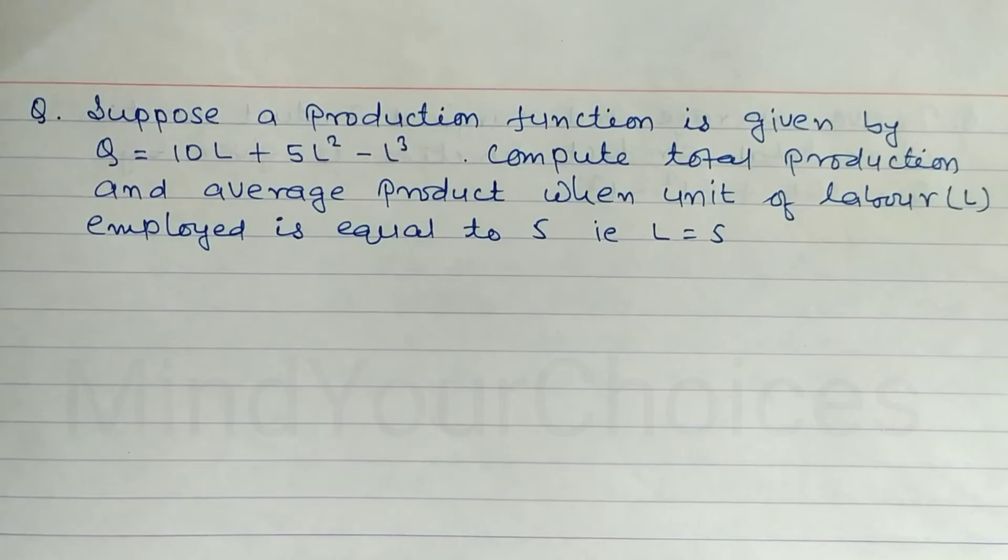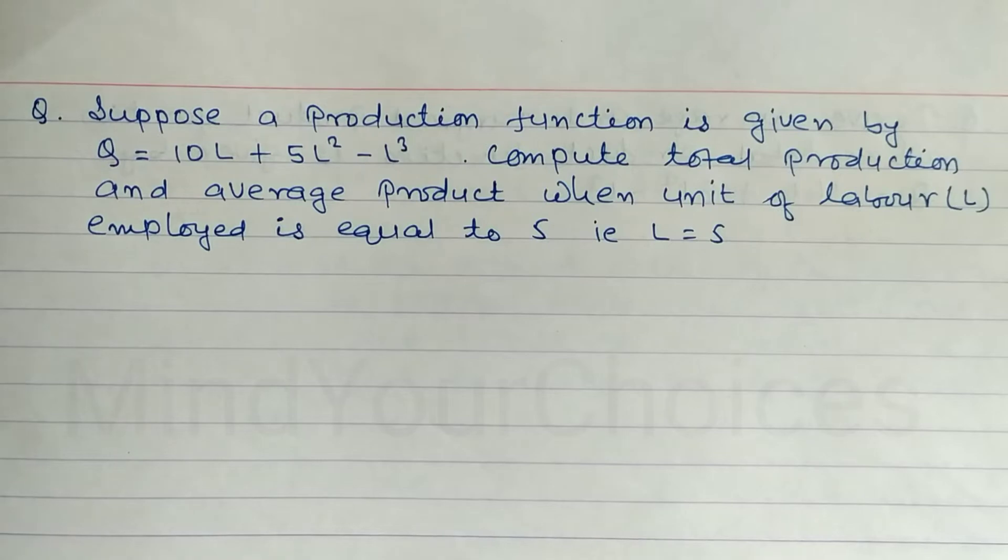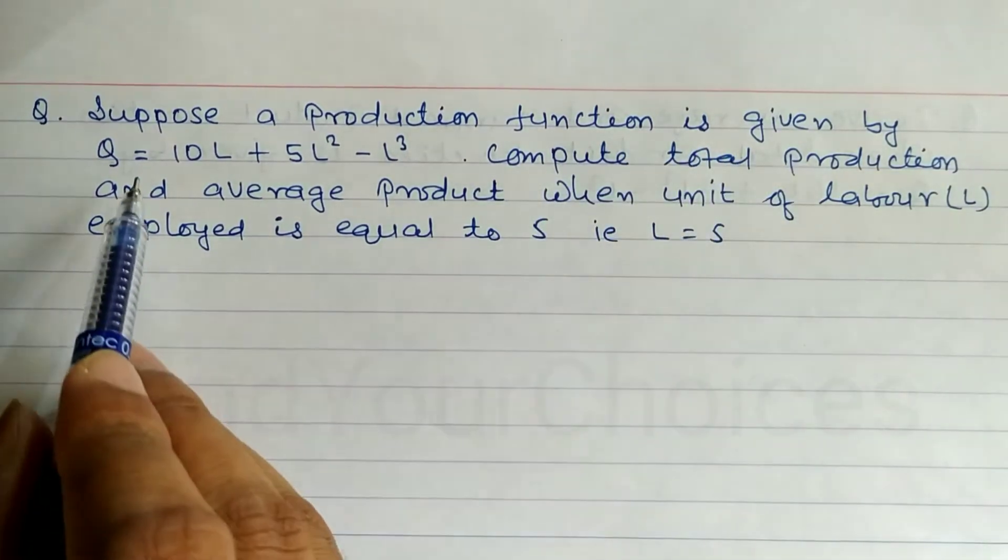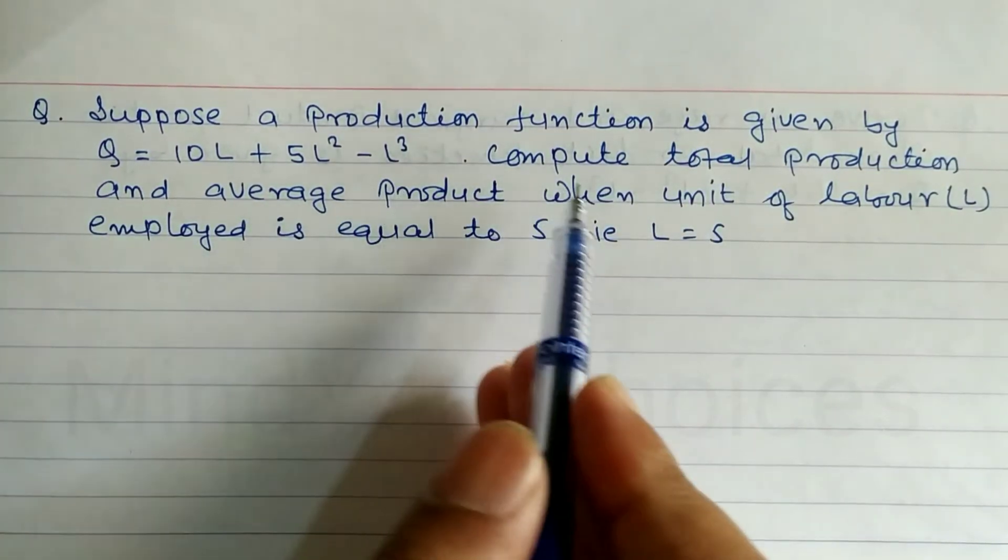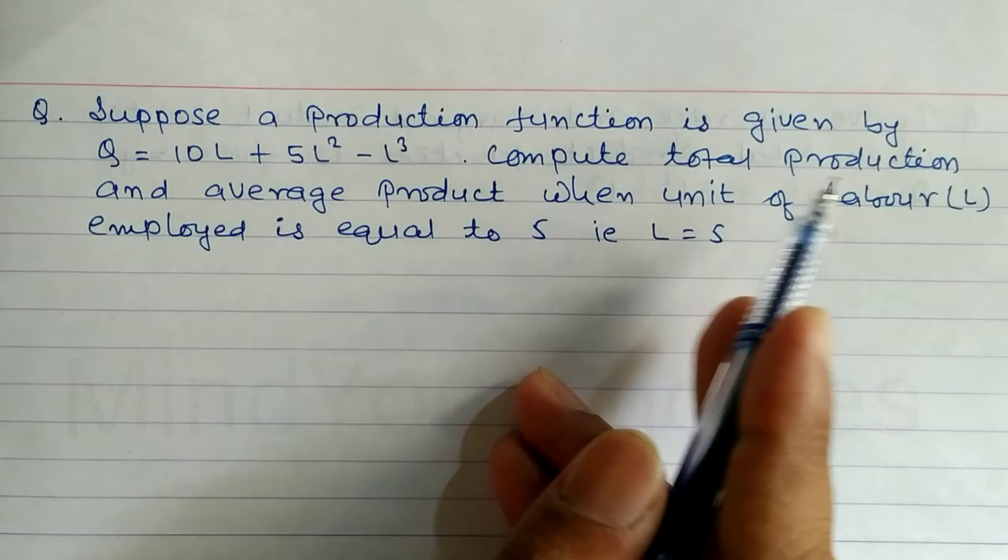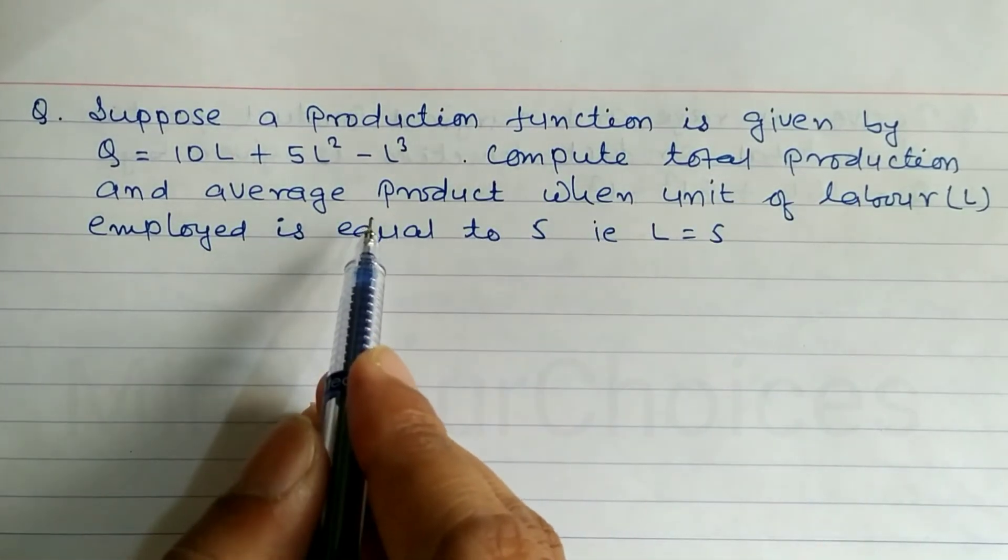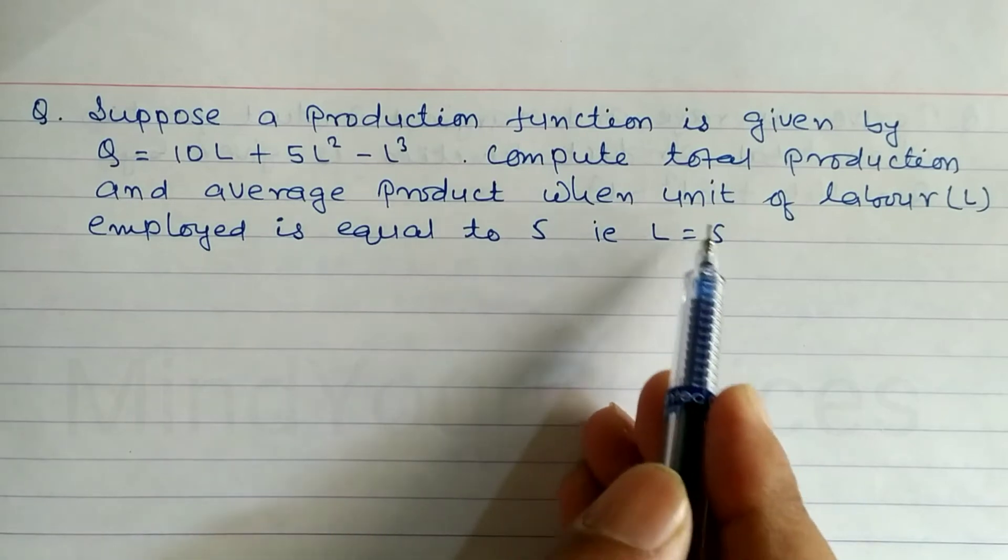Hello everyone, this is question number 19. The question is: suppose a production function is given by Q = 10L + 5L² - L³. Compute total production and average production (TP and AP) when the value of L is equal to 5.